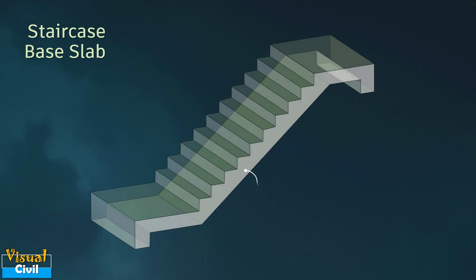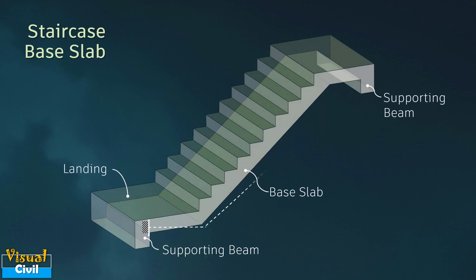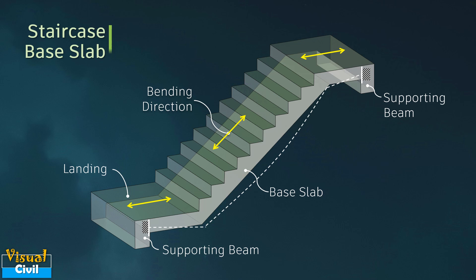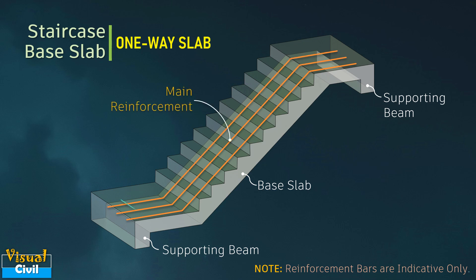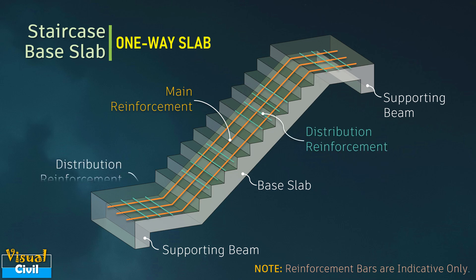The base slab of the staircase supported by a beam also bends in only one direction, similar to a one-way slab. Hence, the main reinforcement is provided along the direction of bending, while distribution reinforcement is provided perpendicular to it.